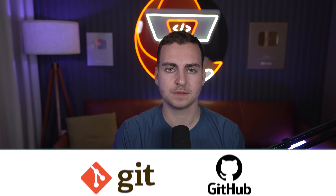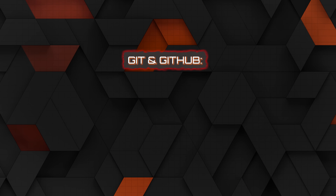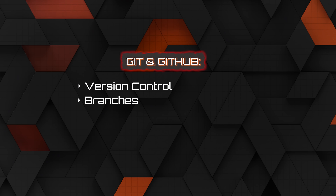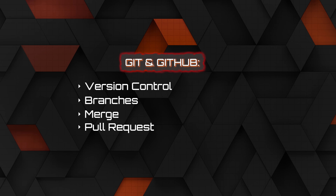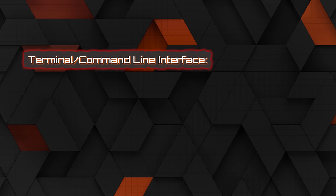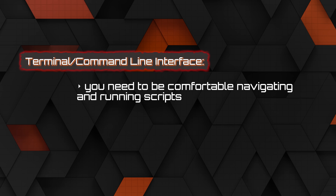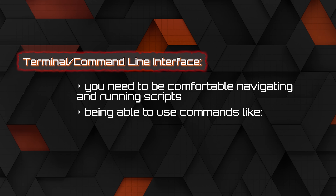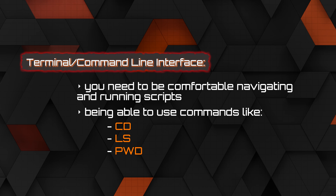As a software engineer, there's a set of tools you just need to know. First is Git and GitHub — version control — which you need no matter what type of development you do. This covers how you save versions of your code and work with other developers. Learn things like branches, merging, and pull requests. Then the terminal or command line interface: as a developer, you need to be comfortable navigating and running scripts from the command line, using commands like cd, ls, and pwd.